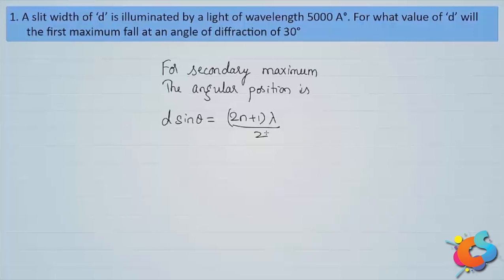The wavelength of incident light λ is given as 5000 angstrom, which can be written as 5×10⁻⁷ meter. The angular position, since it is for the first maximum, is represented by θ₁, given as 30 degrees. We need to find the slit width d.